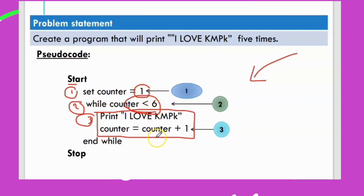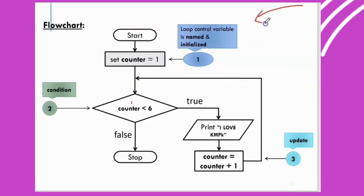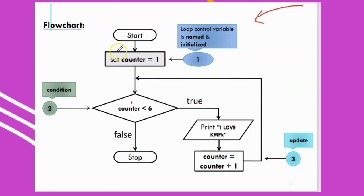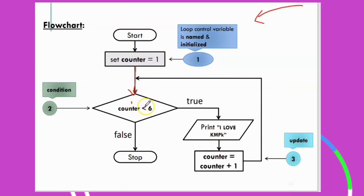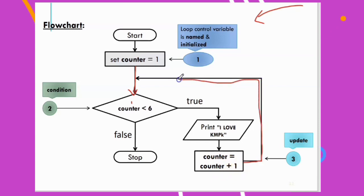When counter reaches five, five plus one equals six, so the computer checks the while condition — six is not less than six — and then stops. For the flowchart, use a capsule shape for 'start', then a rectangle for 'set counter equal to one'. Use a diamond for the condition: when counter is one, one less than six is true — print 'I love Campy Key'. Then update: counter equal to counter plus one. Counter becomes two; check two less than six — true again.